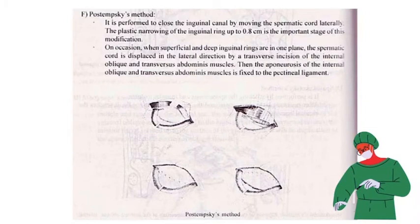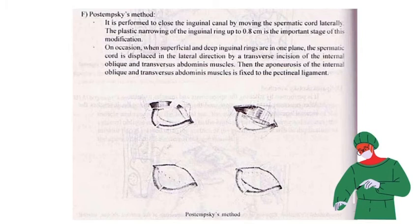Next, we have Postyamski's method. It is performed to close the inguinal canal by moving the spermatic cord laterally. The plastic narrowing of the inguinal ring to 0.8 cm is an important stage of this modification. When the superficial and deep inguinal rings are in one plane, the spermatic cord is displaced in the lateral direction by a transverse incision of the internal oblique and transversus abdominis muscles. Then the upper aponeurosis of the internal oblique and transversus abdominis muscles is fixed to the pectineal ligament.